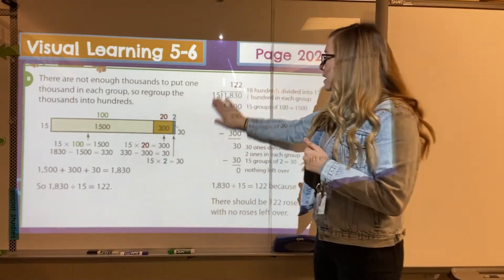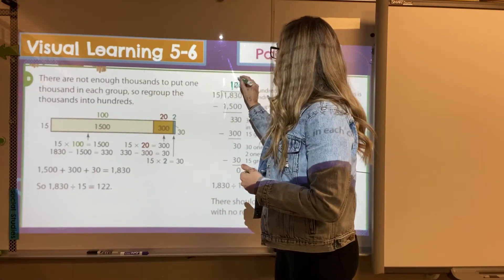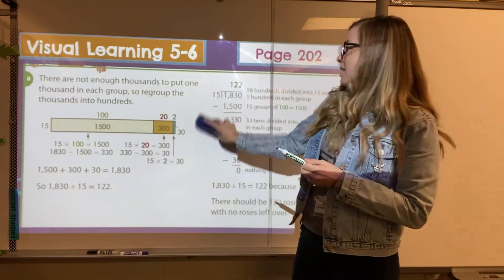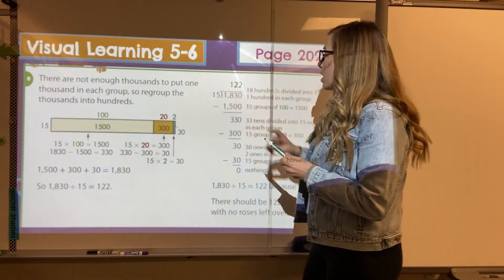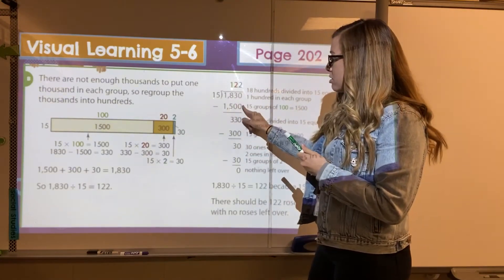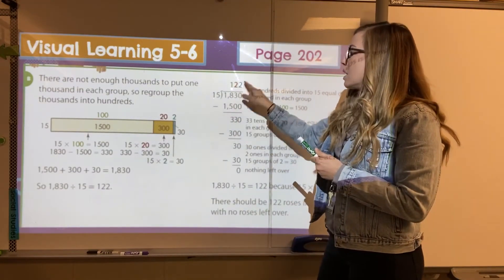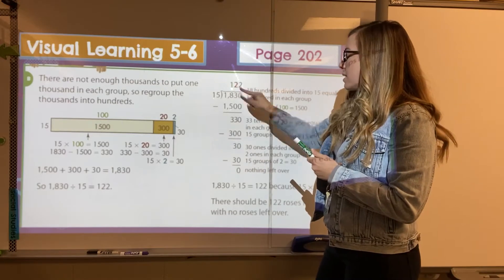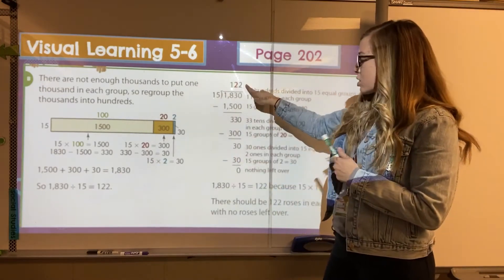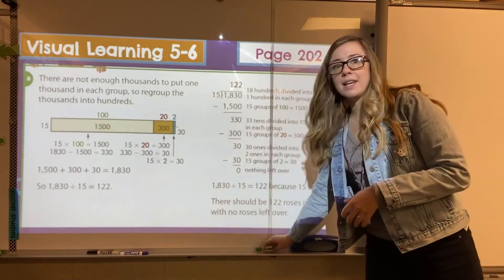And they do the same thing over here — just combining the numbers rather than writing 100, 20, and 2 separately, which is getting more towards the standard method. So they put 15 into 1,830 100 times, got 1,500, leaving 330. Then put 15 into 330 20 times, subtracted 300, leaving 30. Then put 15 into 30 just two times, which is 30, and it zeros out. So we get 122 roses in each cooler.